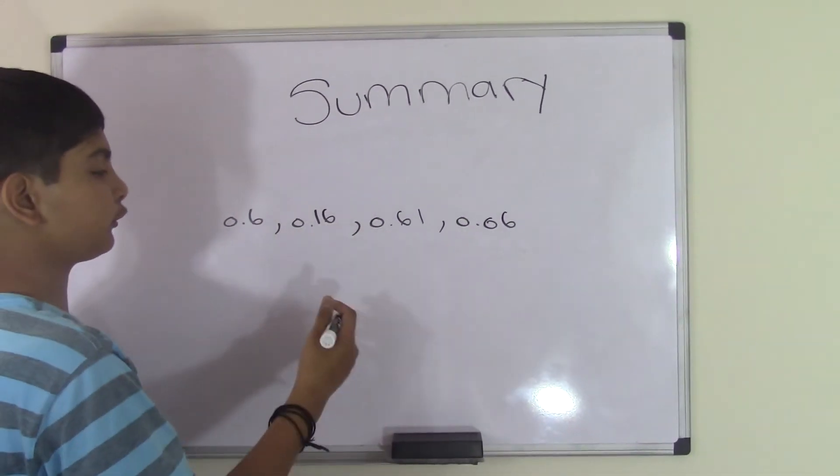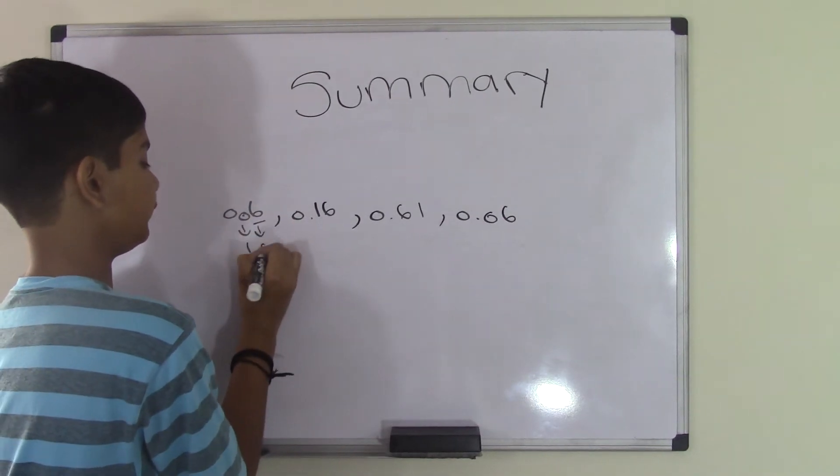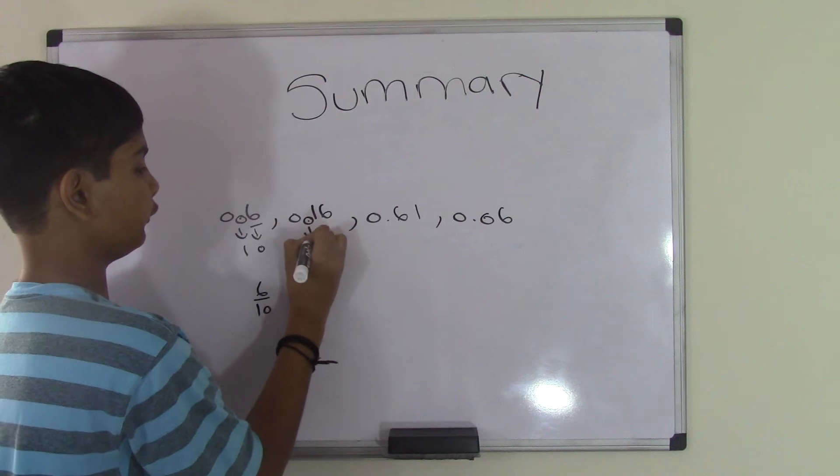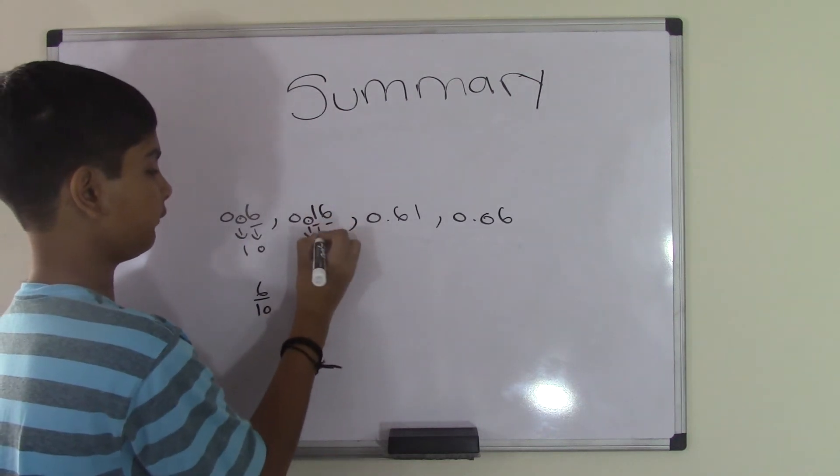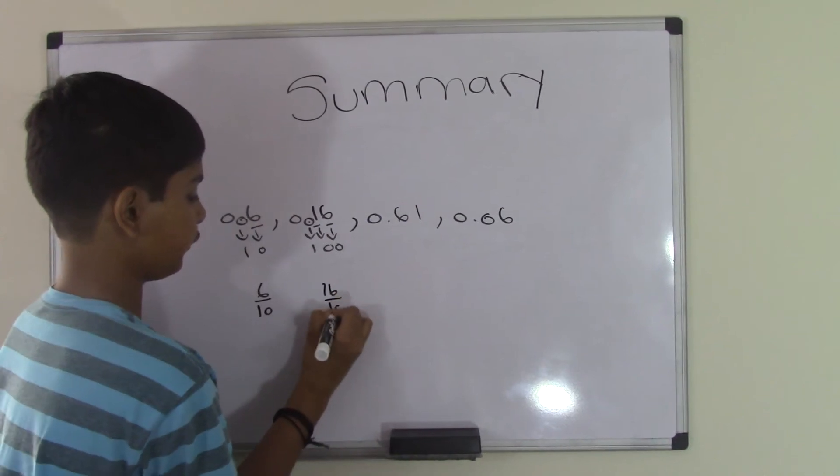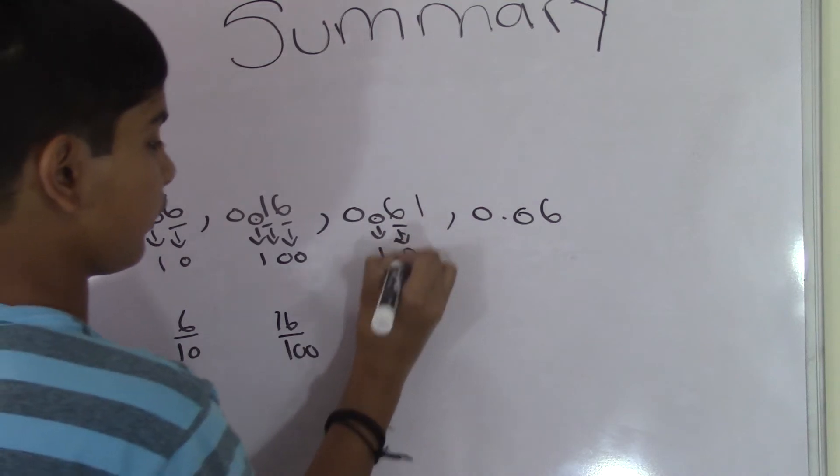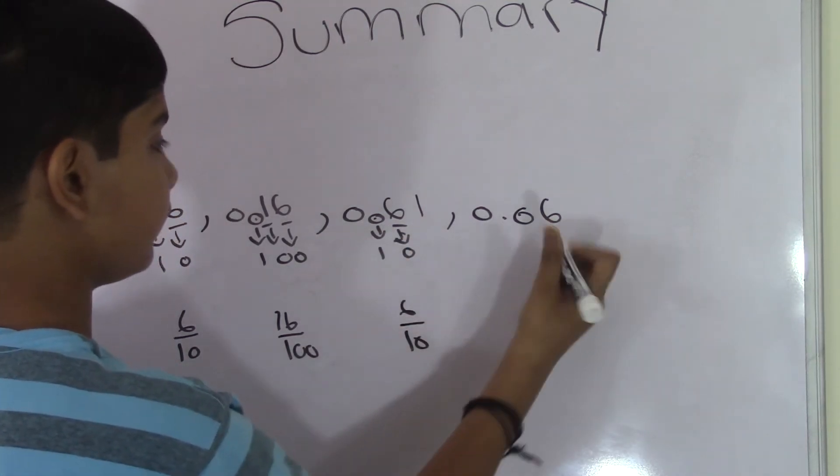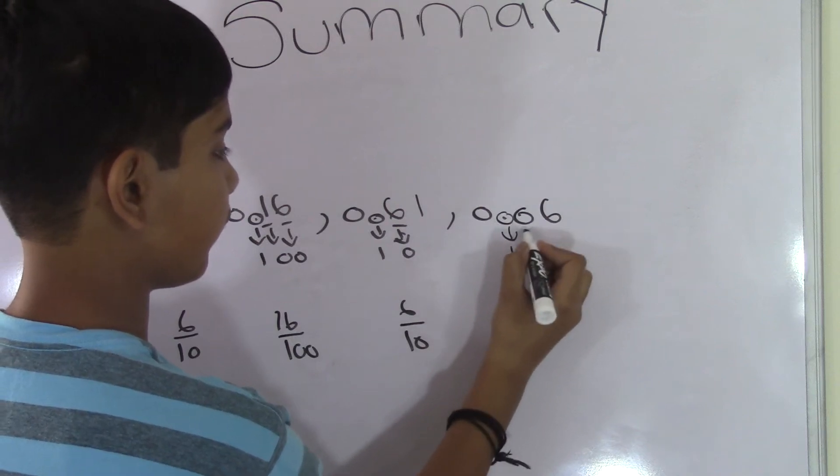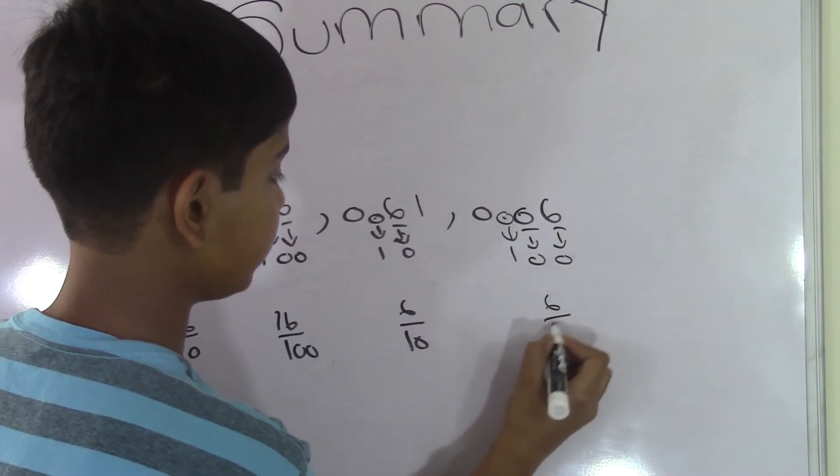Remember, change the decimal point to a 1, and the digits after the decimal point to zeros. Make that 6 tenths. Let me just go ahead and do this one. We get 16 over 100, 61 over 100, and 6 over 100.